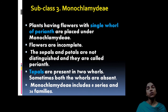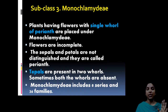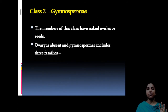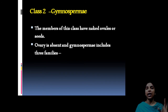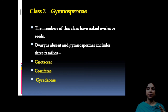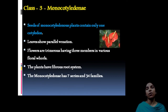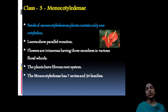The third subclass is Monochlamydeae. Its feature is a single whorl of perianth that cannot be differentiated; these are known as tepals, and the flowers are incomplete. The second class is Gymnosperms — naked seed-bearing plants — with three families: Gnetaceae, Coniferae, and Cycadatae. Class 3, Monocotyledons, have parallel venation, a single cotyledon, and a fibrous root system.